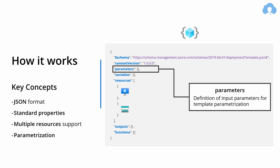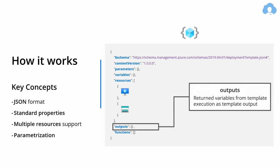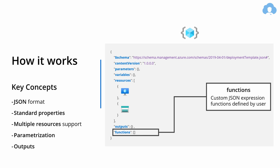Additionally, you have parameters — this section is optional, but if you want to parameterize your template, you can use it to pick up input parameters. If you want to calculate something dynamically, you have the variables section, where you can calculate dynamic properties during execution based on your input parameters. You also have an output section, which allows you to return properties and information from the template execution, and a functions section where you can define a single expression and reuse it across your template.